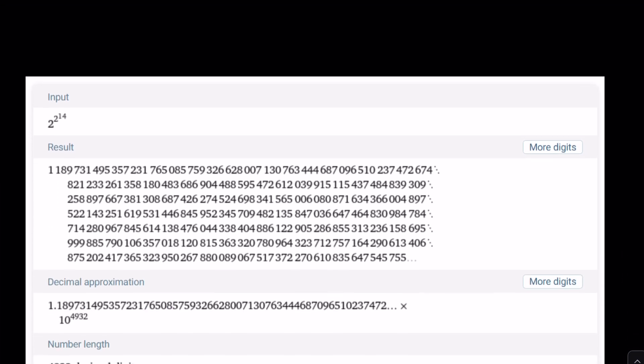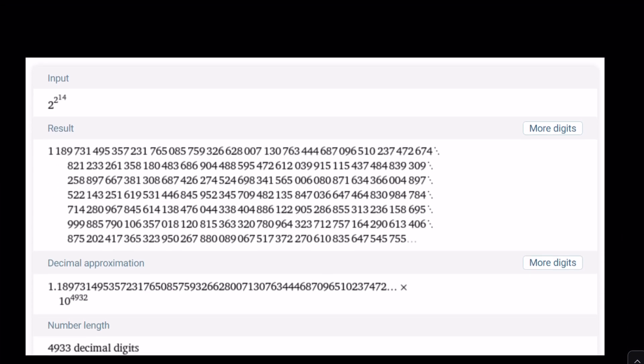Let's take a look at how big this number is. 2 to the power 2 to the power 14 is a very, very large number. Its decimal approximation is 1.1897 something times 10 to the power 4932, which means this number has 4,933 digits. If you click on more digits in Wolfram Alpha, it's going to give you more and more. I don't know how many pages this is going to take, but yes, this is a very large number.